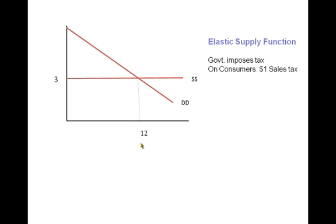Here we have an elastic supply function. And again, we have government imposing a $1 sales tax. It shifts the demand function vertically down by $1.